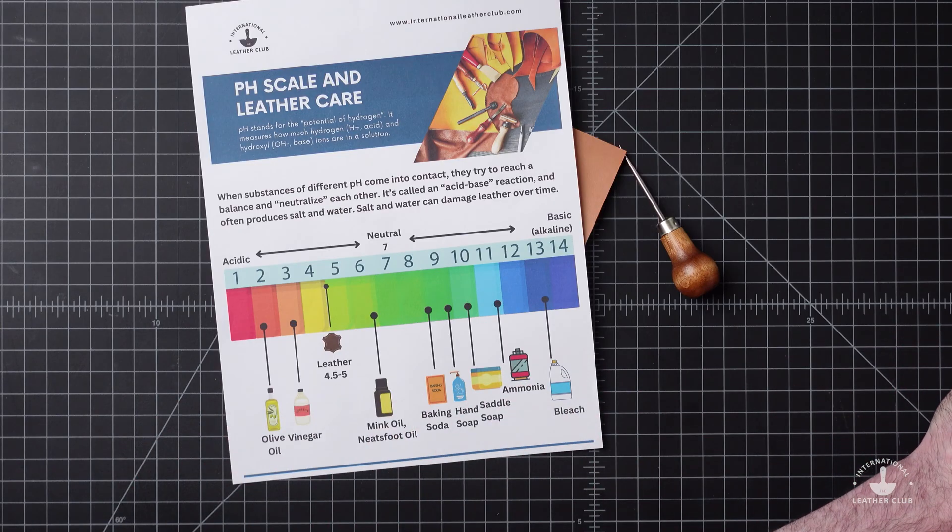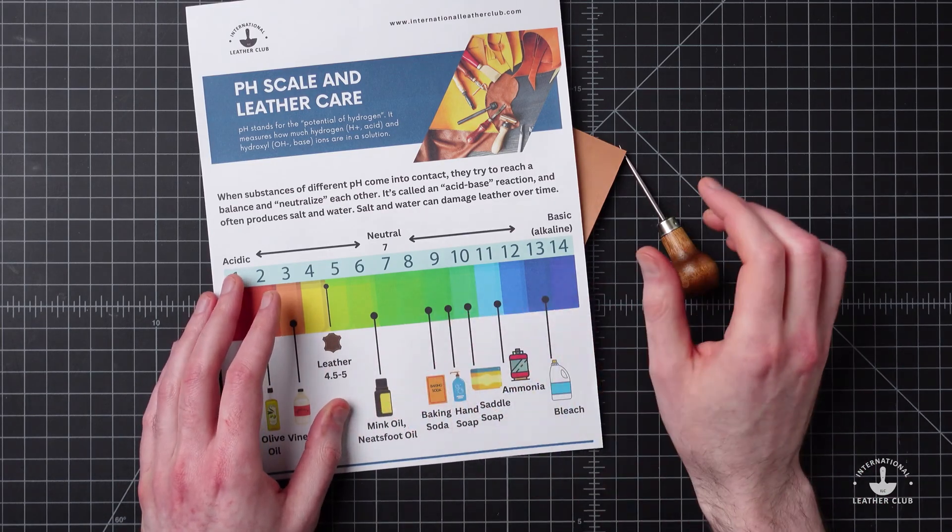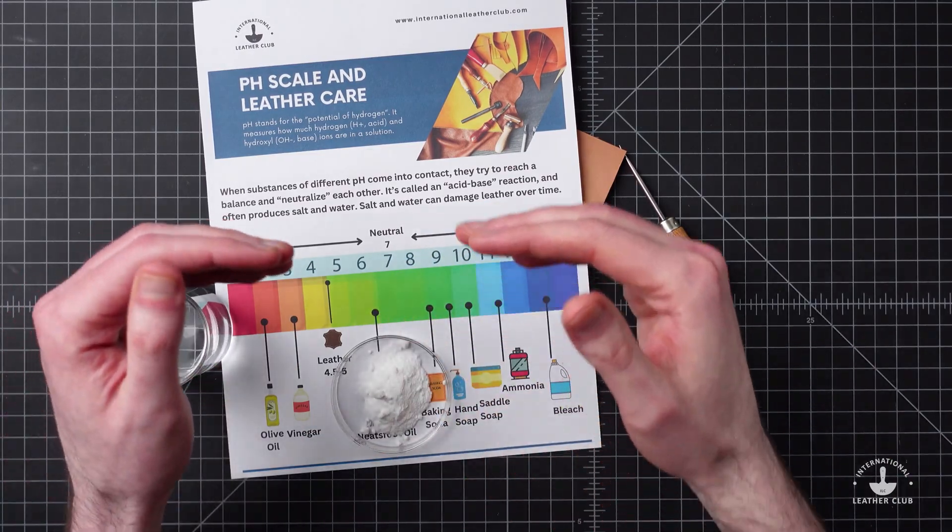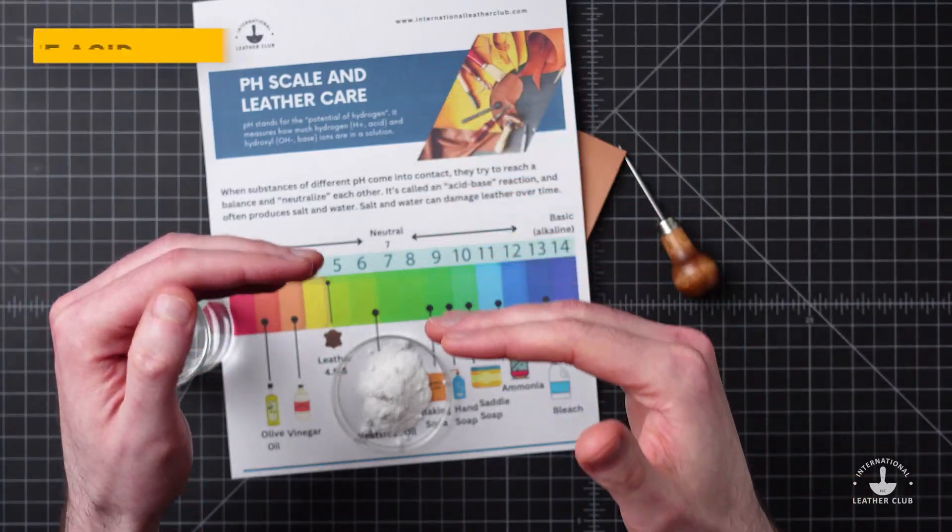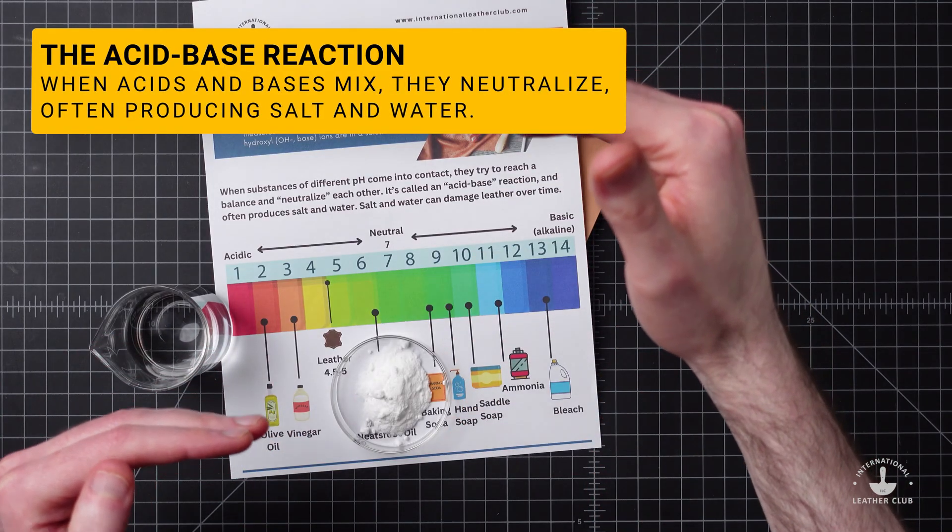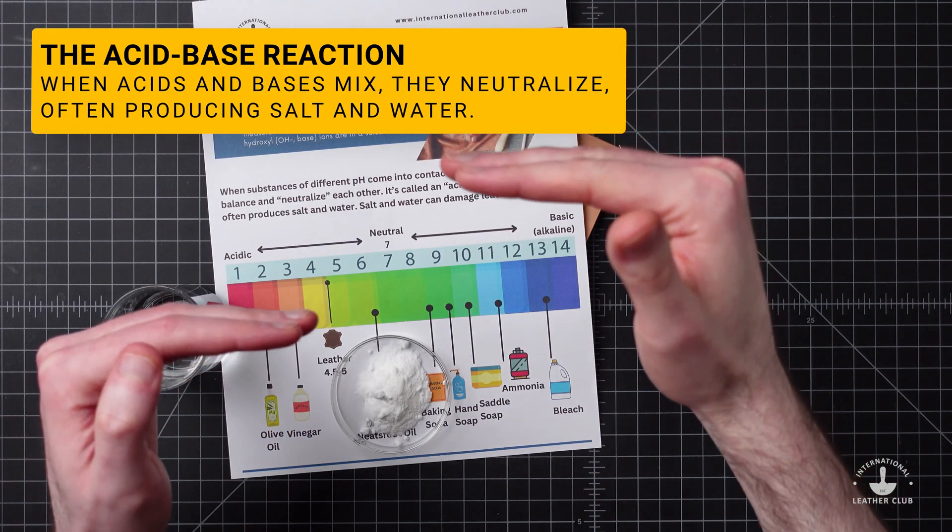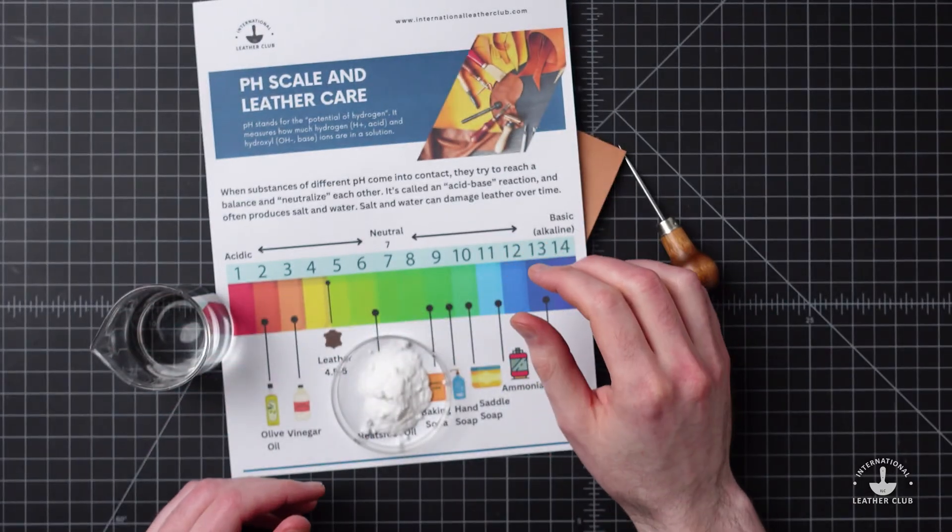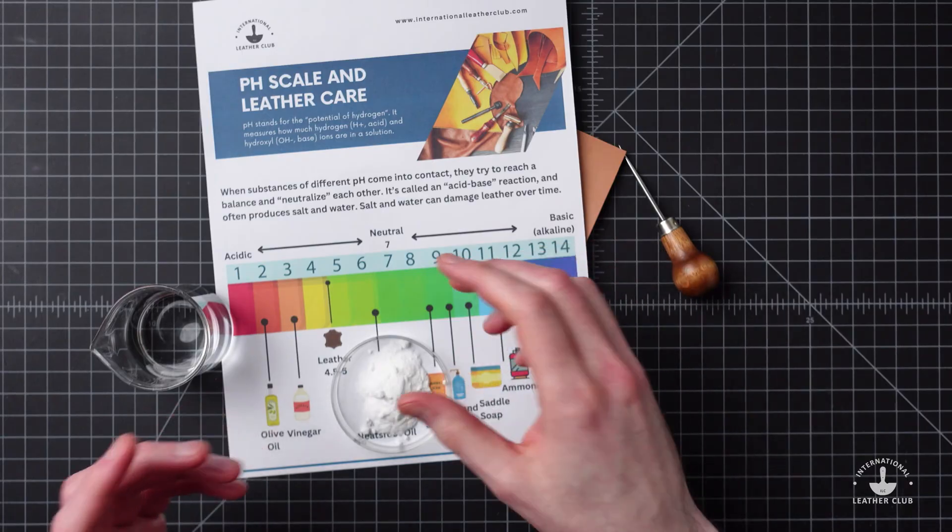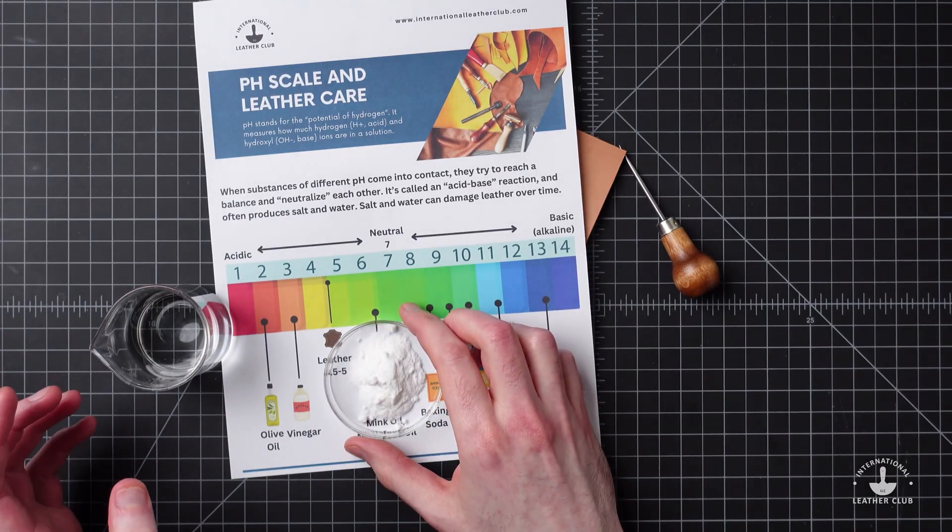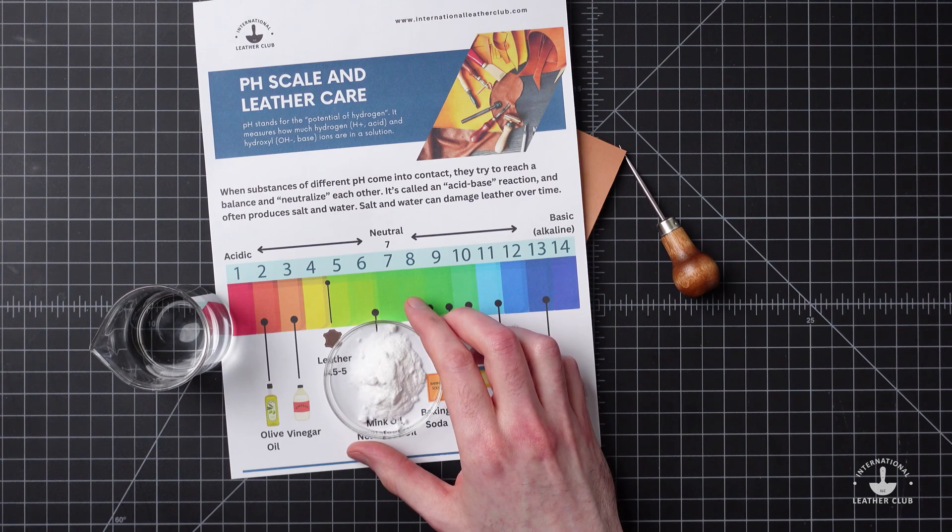This matters because when they come into contact with each other, they're going to try to neutralize and balance. If you've got something that's high in acid and something that is a strong base, they're going to try to come together and meet in the middle. In doing that, it's going to cause a reaction - this is called the acid-base reaction, and that's often going to produce two things: one is salt and the other is water.